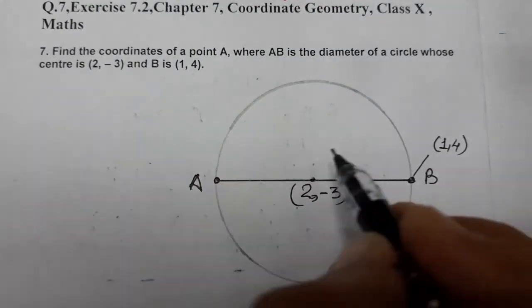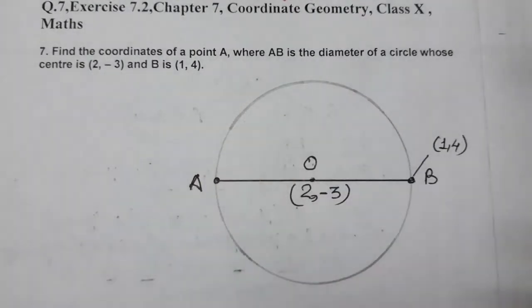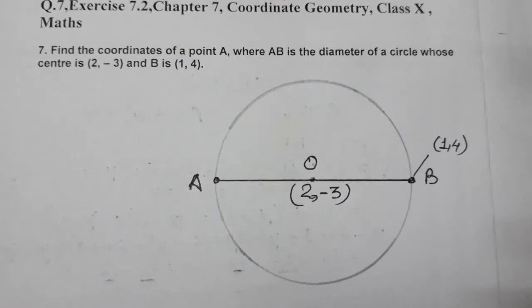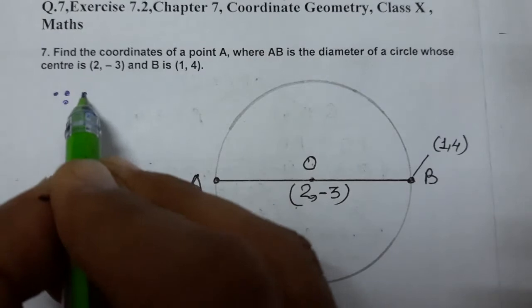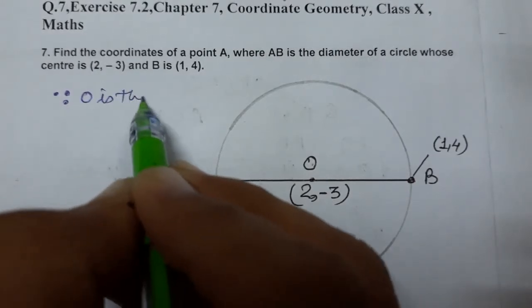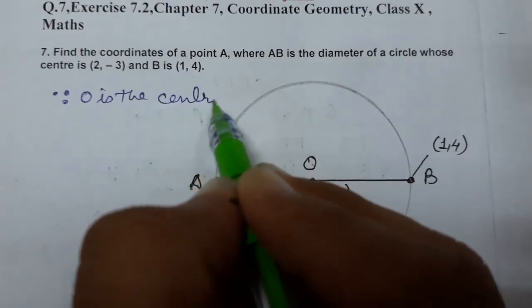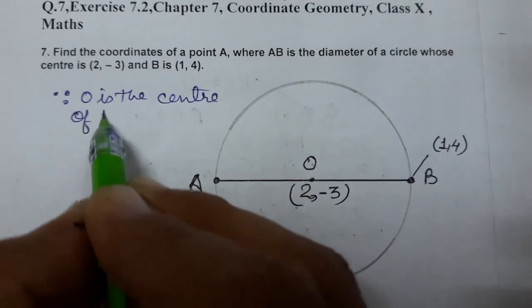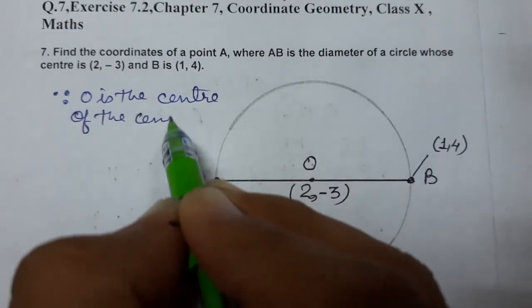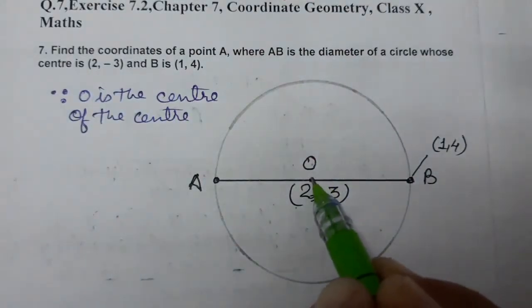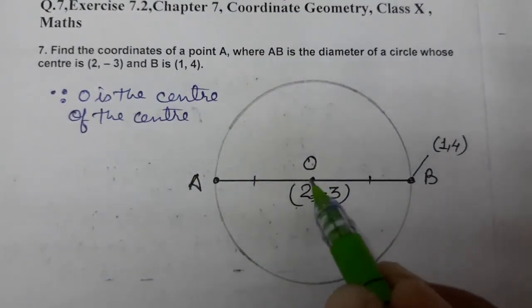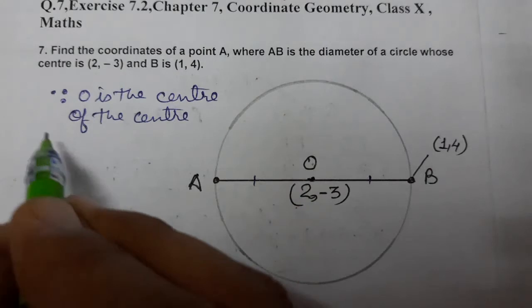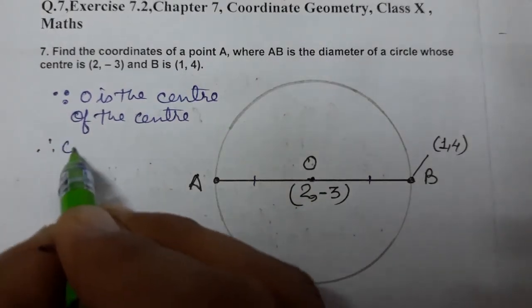Now, since O is the center of the circle and AO equals OB, therefore O is the midpoint of AB.